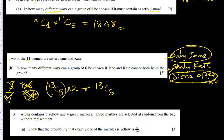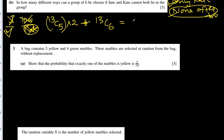Jane and Kate are not part of these 13 — total 15 minus those two. This gives 4290 ways.